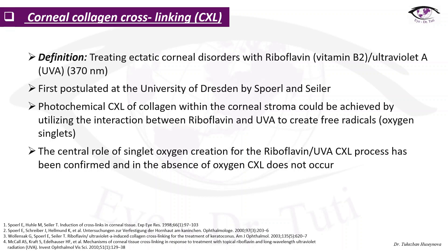About cross-linking — a total presentation and video will be made, so stay tuned for a more detailed explanation. Here is just general information. Cross-linking is the treatment modality for keratoconus where we combine riboflavin with UVA light, first postulated at the University of Dresden by Spoerl and Seiler. The photochemical cross-linking of collagen within the corneal stroma is achieved through the interaction between riboflavin and UVA to create free radicals and oxygen singlets — without oxygen singlets, cross-linking does not occur.